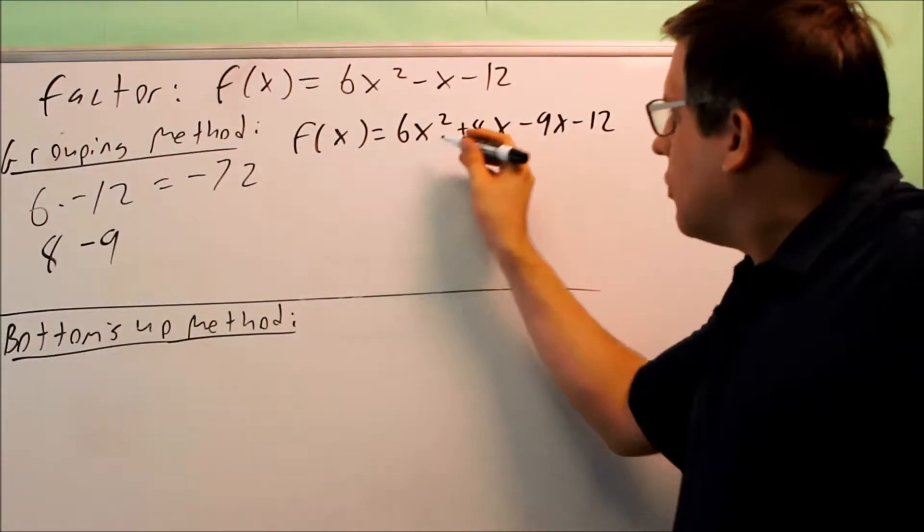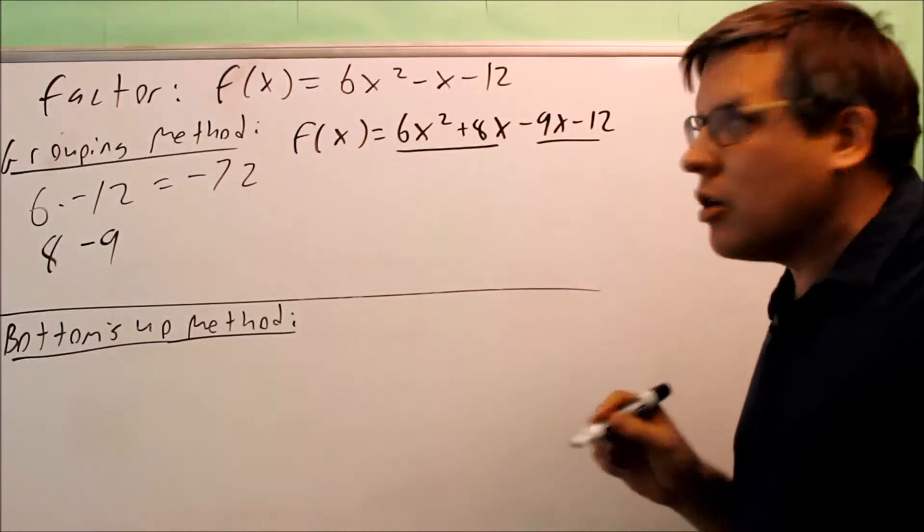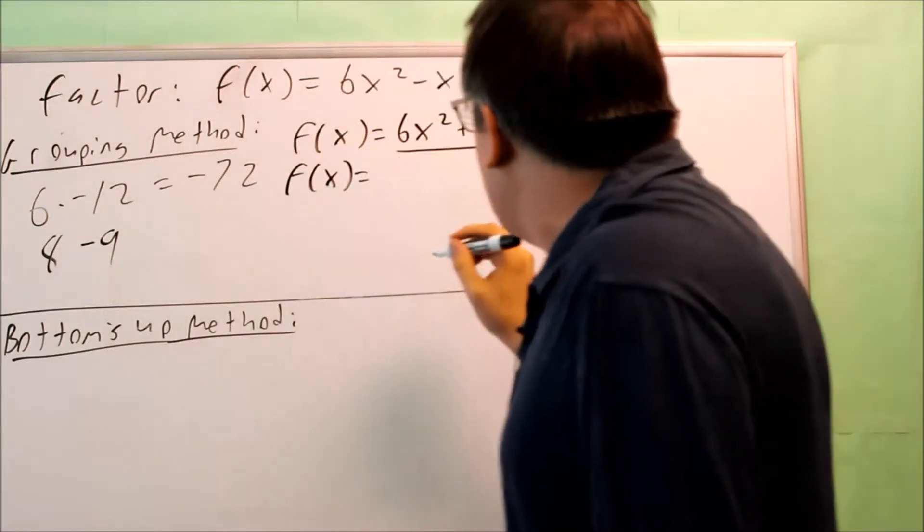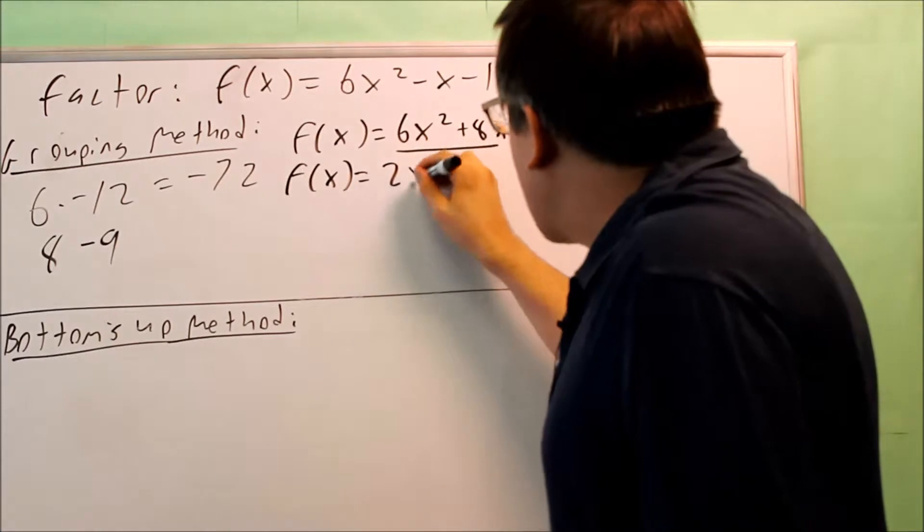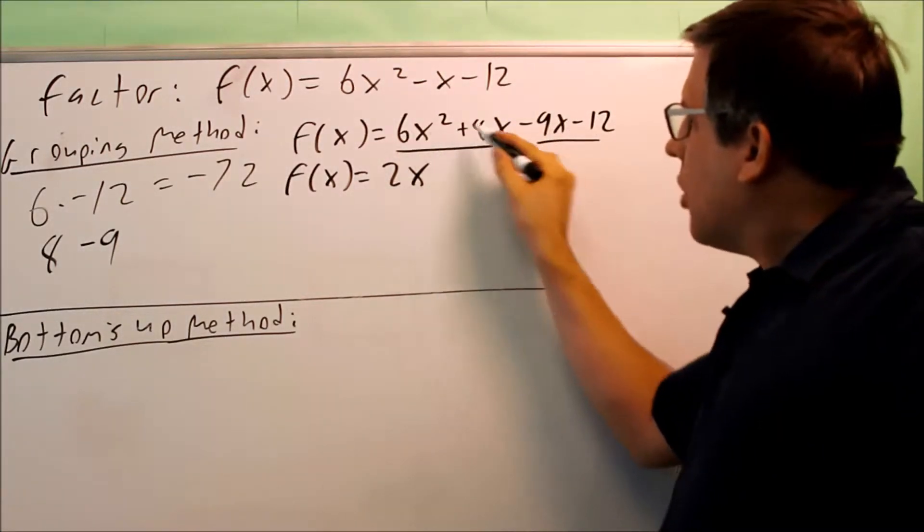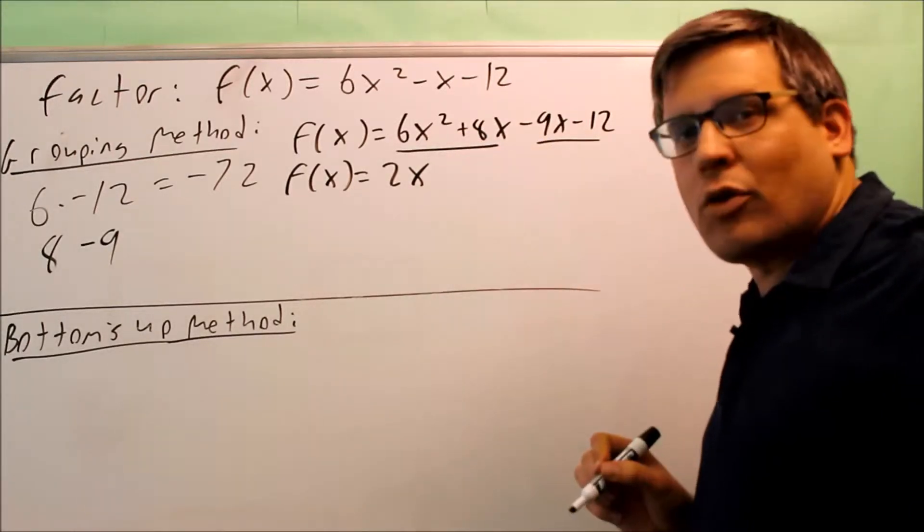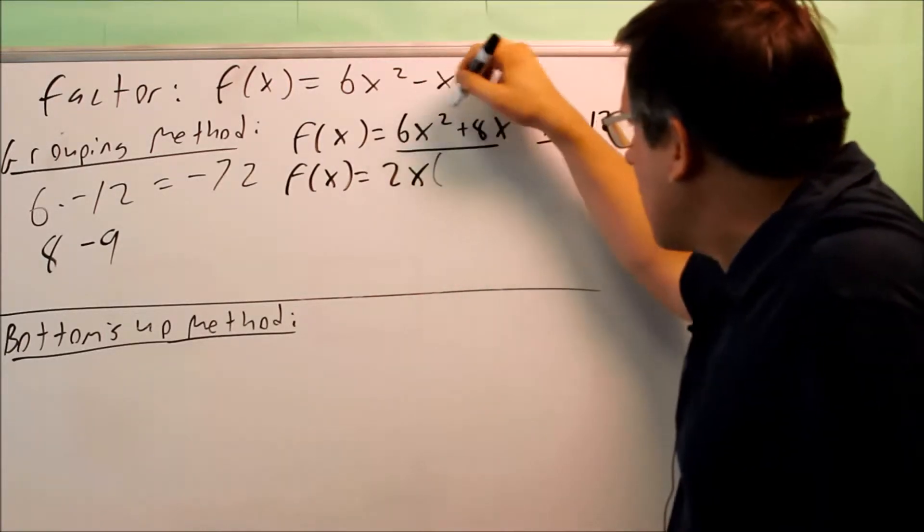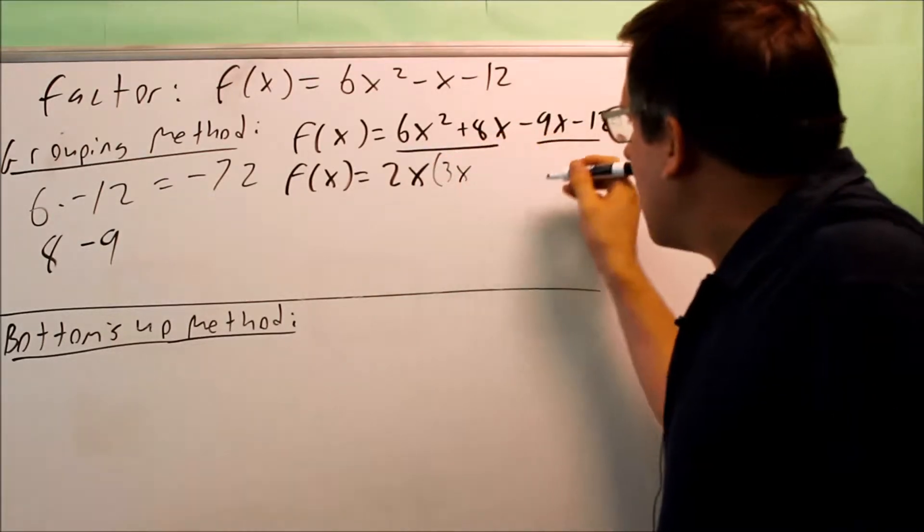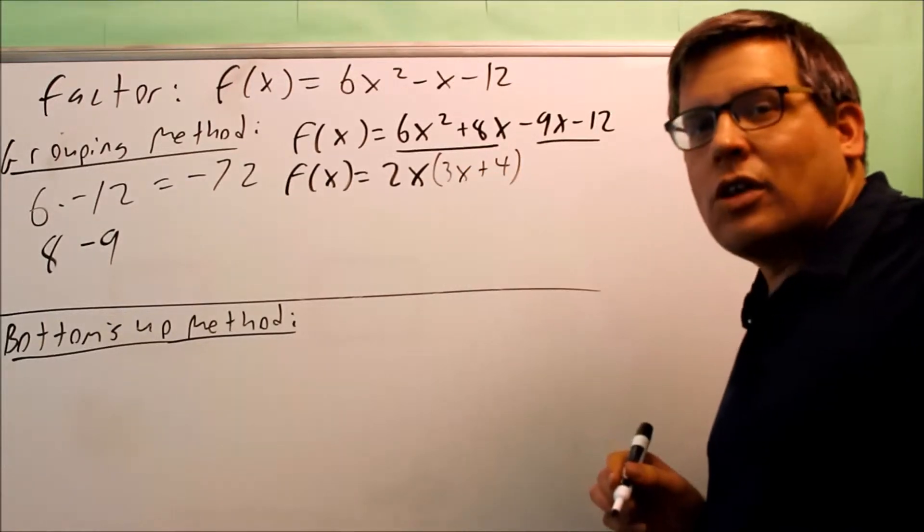So now what I'm going to do is the grouping method means that we do this. We're going to group the first two and the second two together and we're going to factor each of these separately. So I want to factor just the first two terms. So if I do that, I know that a 2x is going to come on the outside. That's something that would be common to both of these. So 2x would be what I could pull out of the first two terms. Now if I pull that out, 6x squared divided by 2x, I get 3x left over there. 8 divided by 2 will give you a positive 4. So I get 3x plus 4 on the inside there.